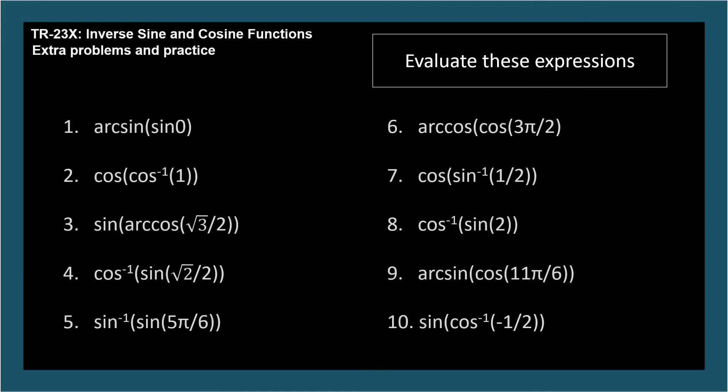Finally, let's try some composite functions which are nested functions with the output of the innermost being used as the input for the outermost. If the outermost function is an inverse function, then the result will be an angle, the angle whose. And if the outermost function is a regular trig function, then the result will be a unitless ratio. Pause if you like, I'll show the answers, and that will be the end of this video.